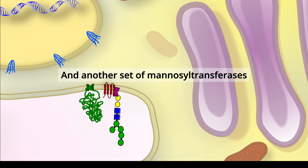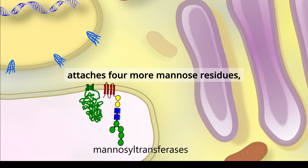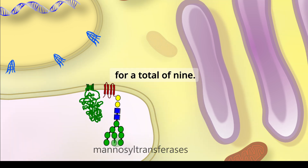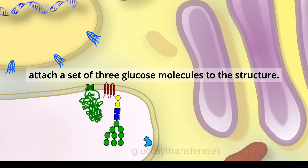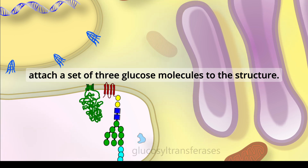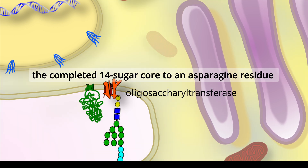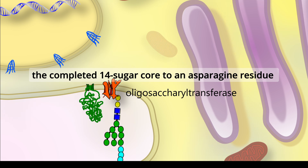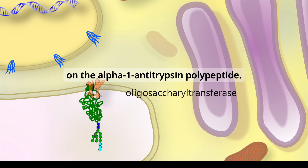Another set of mannosyltransferases attaches four more mannose residues for a total of nine. Finally, glucosyltransferases attach a set of three glucose molecules to the structure. An oligosaccharyltransferase then transfers the completed 14-sugar core to an asparagine residue on the alpha-1 antitrypsin polypeptide.